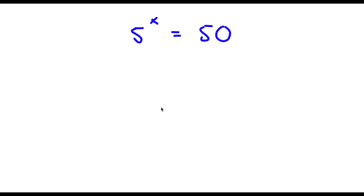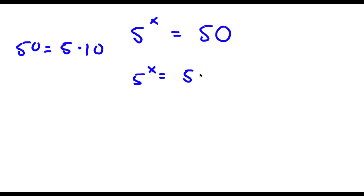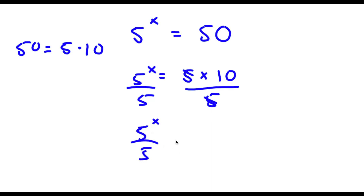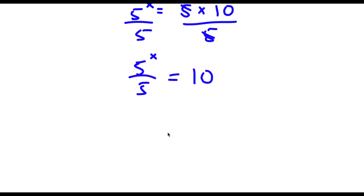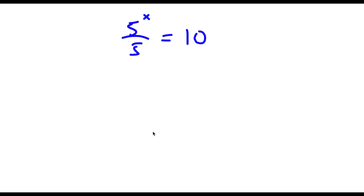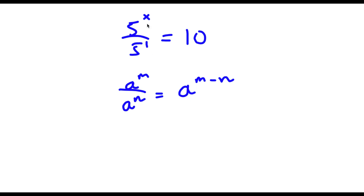So I have 5 to the power of x is equal to 50. Now 50 is the same thing as 5 times 10. So now I have 5 to the power of x is equal to 5 times 10. I'm going to go ahead and divide both sides by 5, so these two cancel out. Using the exponent rule — a to the power of m over a to the power of n equals a to the power of m minus n — 5 to the power of x over 5 to the power of 1 gives us 5 to the power of x minus 1, which equals 10.